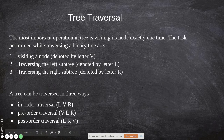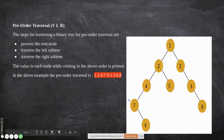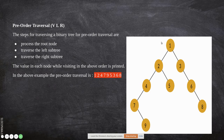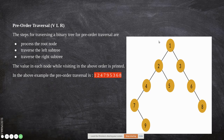Now we will see these three traversals with an example tree. First, we'll look at pre-order traversal. As the name suggests, the parent is printed first, then the left and right. Tree traversal always starts from the root node, so the root is the parent, and we print it first — so 1 is printed.